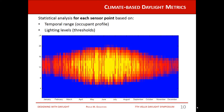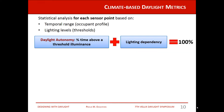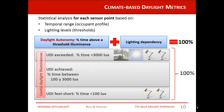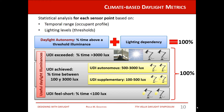Essentially, climate-based daylight metrics perform a statistical analysis for each sensor point based on a certain temporal range and lighting levels. This is how we get daylight autonomy and its complementary light and dependency, which together account for 100% of the range divided by a single threshold. Useful daylight illuminances divide the illuminance through time into different illuminance ranges, and the sum of all ranges for each sensor point equals 100% of the time range considered.